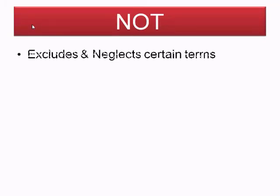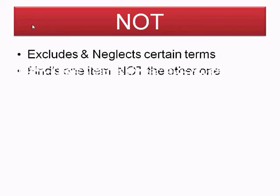Moving on from the AND function, which helps to narrow a search while combining like terms, we will do the opposite with the NOT function. We use it to narrow a search because it will exclude or neglect certain terms — in other words, it will find one item but not the other one, whereas AND combined both of them.